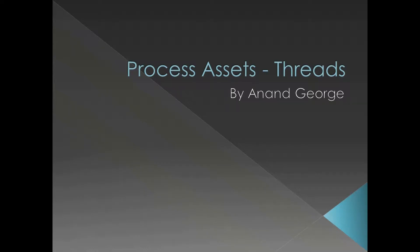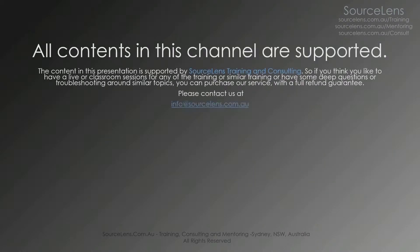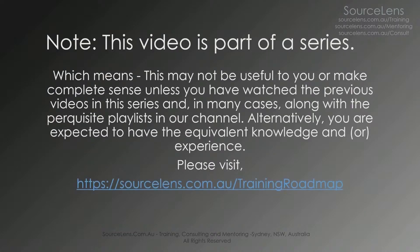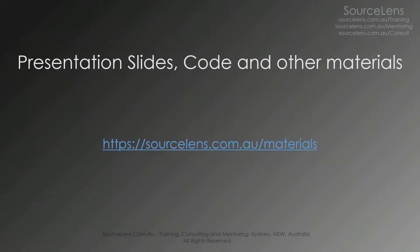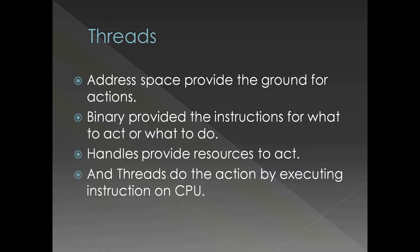In this presentation we're going to see yet another asset of process, which is thread. We have seen three other kinds of assets: address space, which provides the ground for actions or doing things.